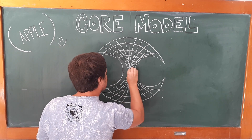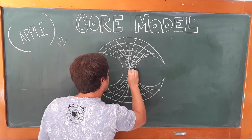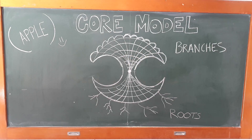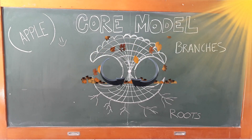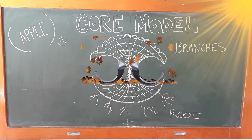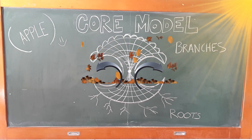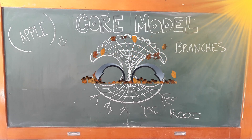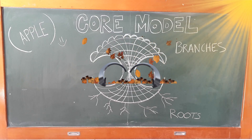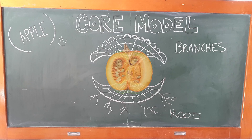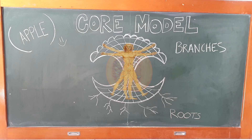Now let's return back to the seed. It germinates and blossoms into roots and branches which shed their leaves to be absorbed by the roots again, who then transfer the energy back up to the leaves to be photosynthesized before dropping again. It's a perpetual cycle. This core model can be found in fruits and vegetables — it gives birth to all patterns in nature.